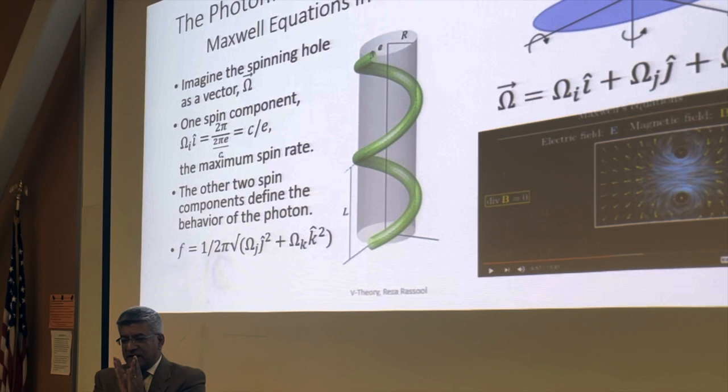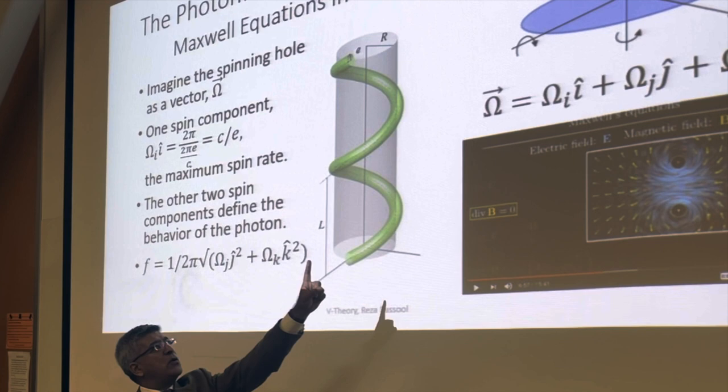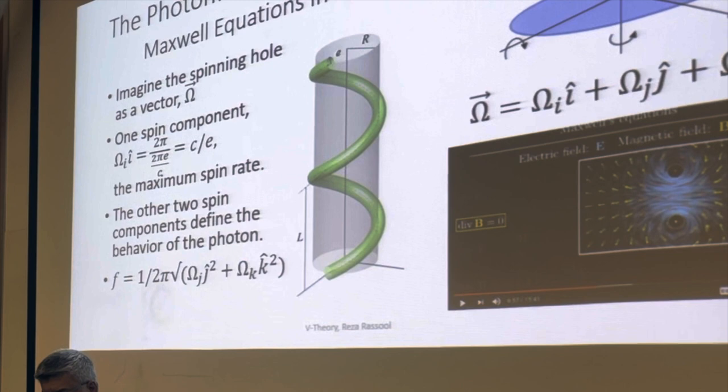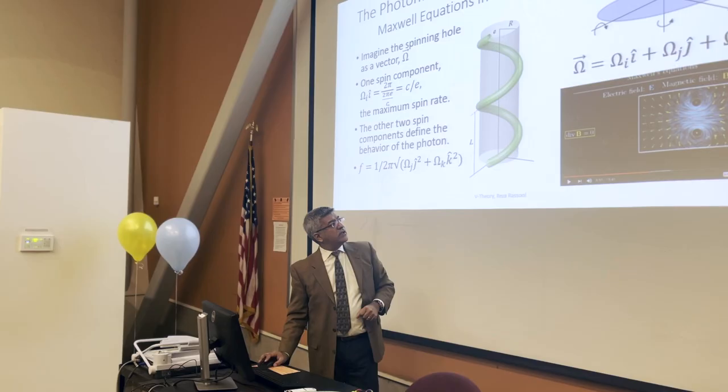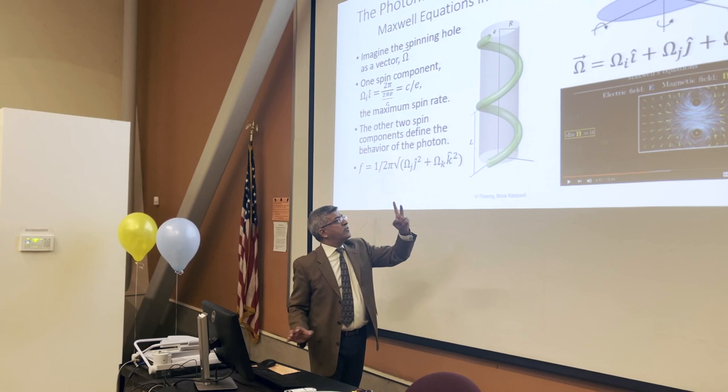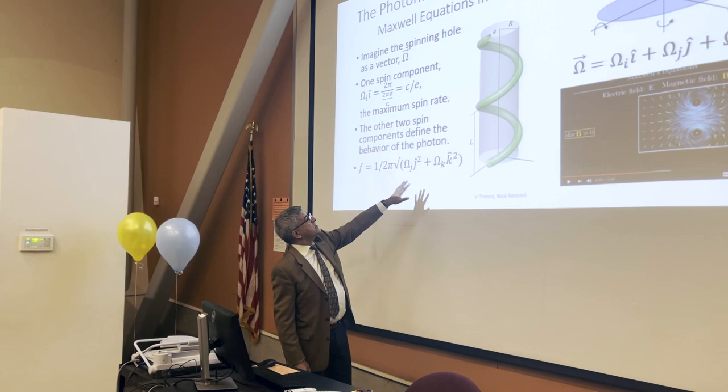A photon by definition, by v-theory's definition, is where the spin around one axis, let's say omega i over here is maxed out and this one over here caused the ether to tear, but they're still spinning in these two other dimensions j and k and the mixture of these two result in the frequency of the photon so this is what v-theory predicts.